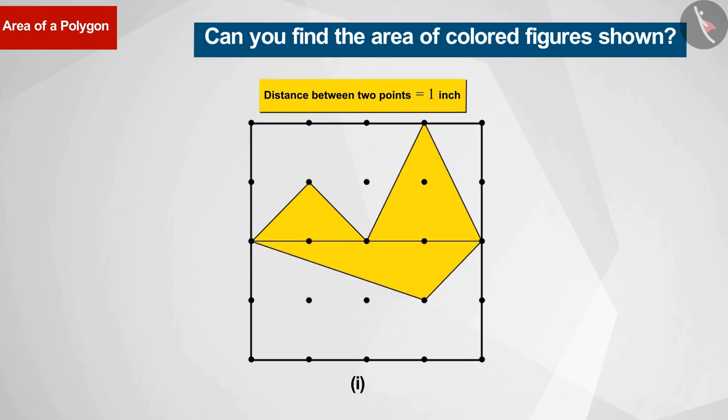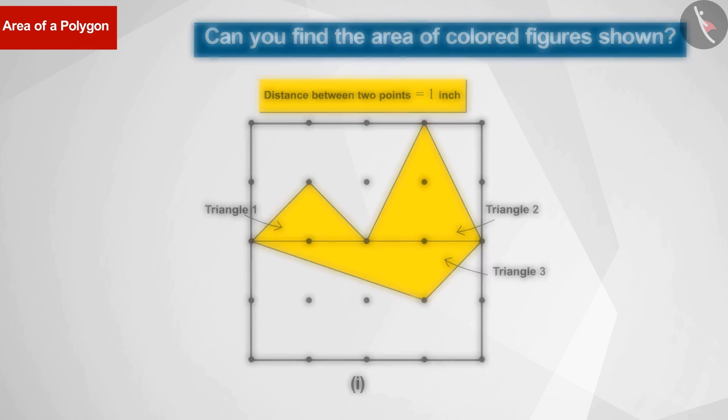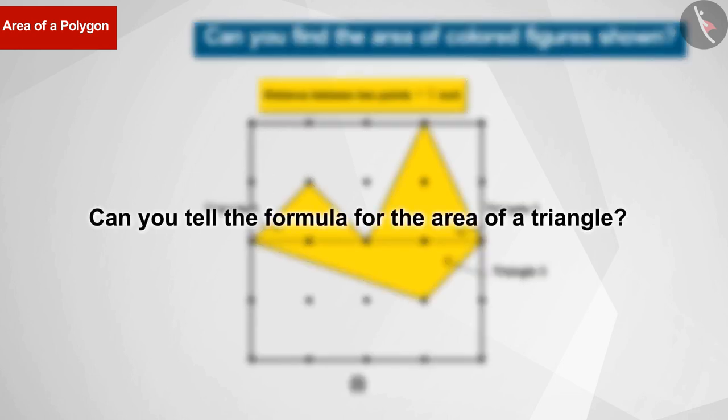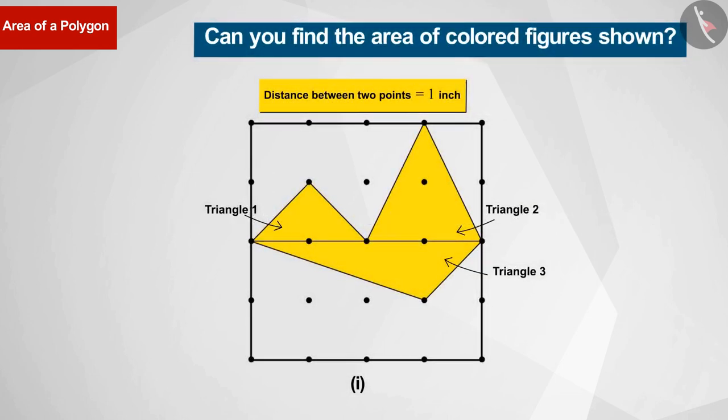We can classify these as triangle 1, triangle 2, and triangle 3. Can you tell the formula for the area of a triangle? Well done. The formula for the area of a triangle is 1/2 times the base times the height.